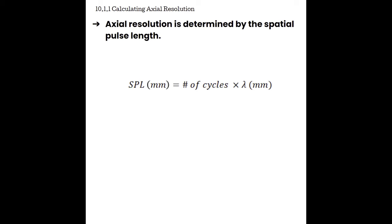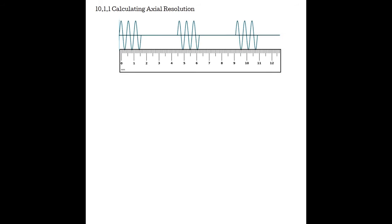Spatial pulse length is a distance measurement. In this example, we have a pulse that takes up about a centimeter and a half of space — 15 millimeters. Half of that is the axial resolution: 7.5 millimeters or 0.75 centimeters. The average axial resolution of an imaging ultrasound system is 0.05 to about 0.5 millimeters. It's important to remember that when axial resolution has a low numerical value, that means the axial resolution is better, because it tells us the minimum distance two reflectors must be when parallel to the sound beam to become resolved on the display.